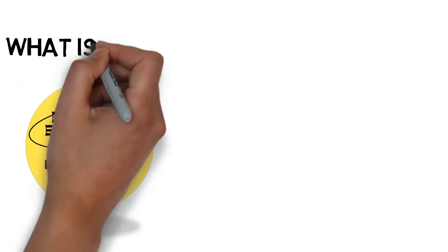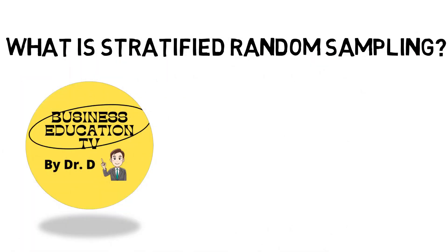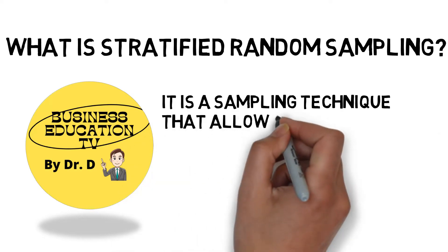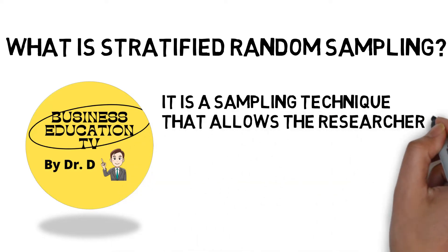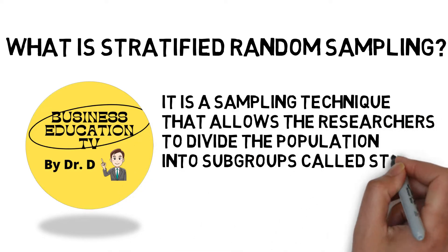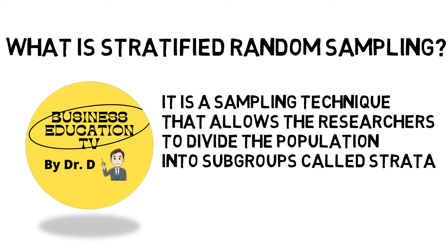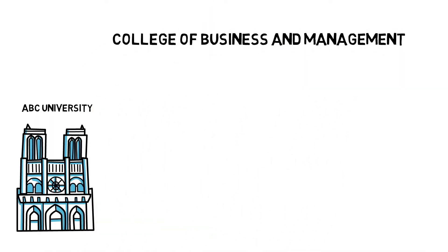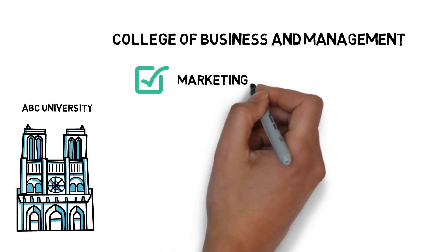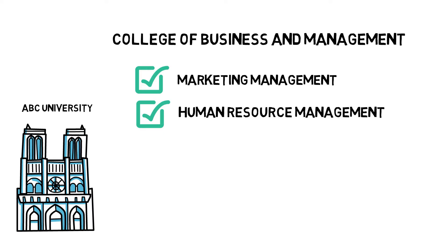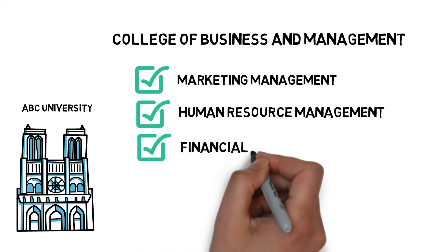Now, let's talk about what is Stratified Random Sampling. It is a sampling technique that allows researchers to divide the population into subgroups called strata. For example, the College of Business and Management has three courses under it: Marketing Management, Human Resource Management, and Financial Management.